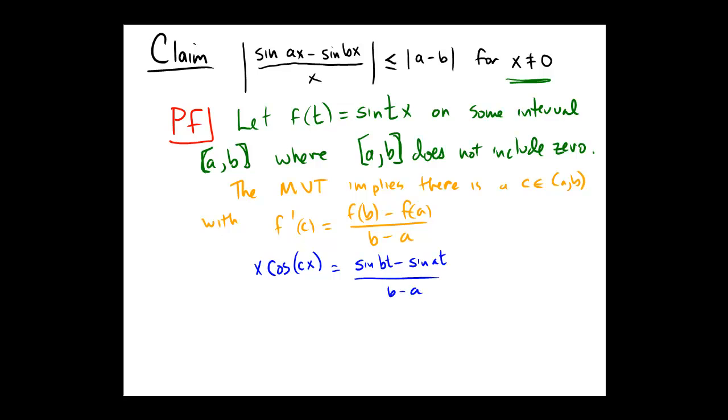Now notice that the cosine of c is bounded between negative 1 and 1, it's just a cosine function. So therefore, the absolute value would be bounded between 0 and 1. Thus, what do we get from that?